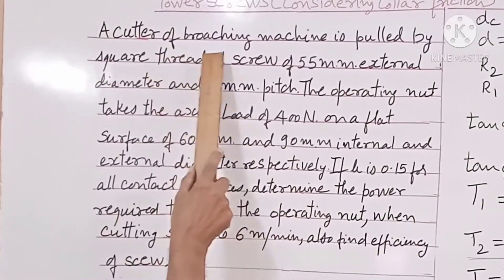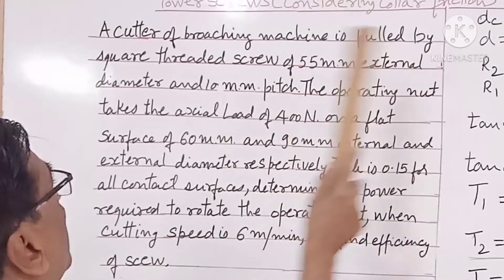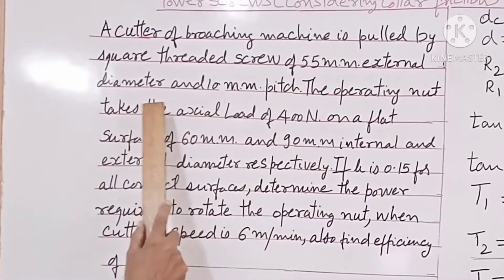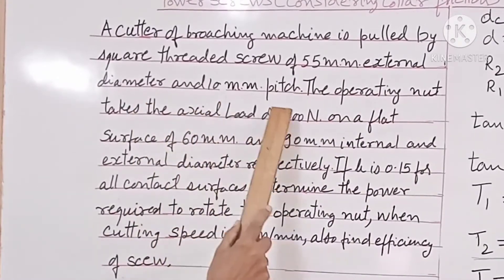A cutter of broaching machine is pulled by square threaded screw of 55 mm external diameter and 10 mm pitch.